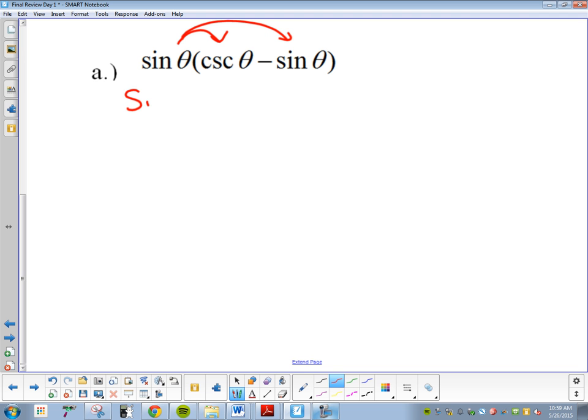That's going to make it a little bit easier. So sine times cosecant minus, what's sine times sine going to get me? Sine squared. So sine times cosecant minus sine squared. So we foiled if we could.